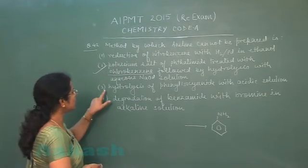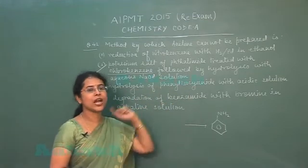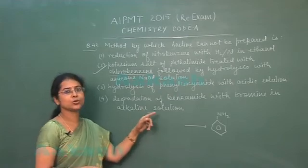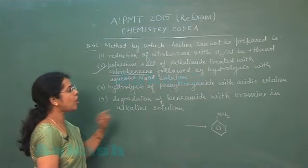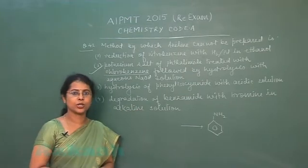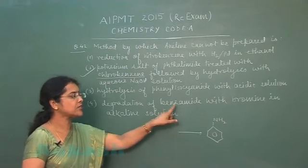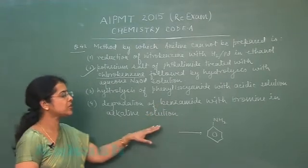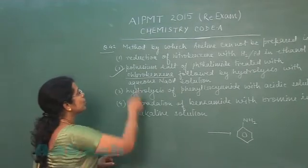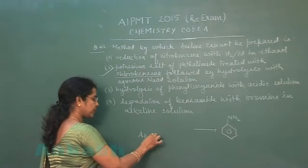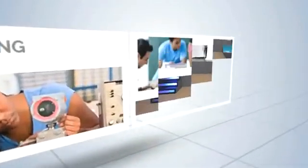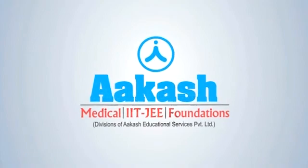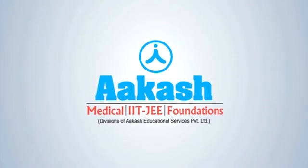Checking the remaining options: the third option, hydrolysis of phenyl isocyanide, produces primary amines from all alkyl and aryl isocyanides, so this method can be used. The fourth option, bromamide degradation of benzamide with bromine in alkaline solution, also works since benzamide is a primary amide. Therefore, the correct answer is the second option — this method cannot be used for the preparation of aniline.